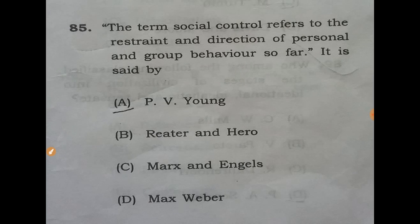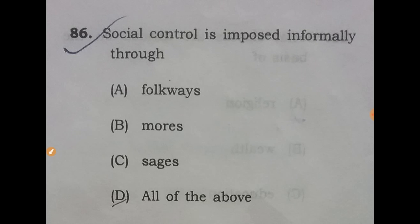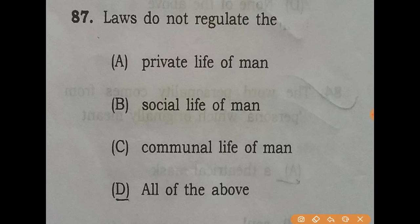Question 85: the term social control refers to the restraint and direction of personal or group behavior — it is said by the answer is B: Lumley. Question 86: social control is imposed informally through — the answer is D: all of the above. Question 87: law does not regulate the answer is C: communal life of man.